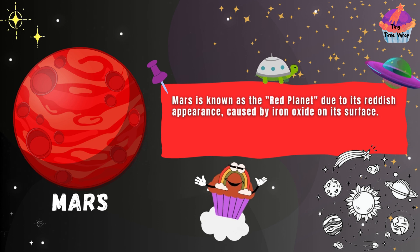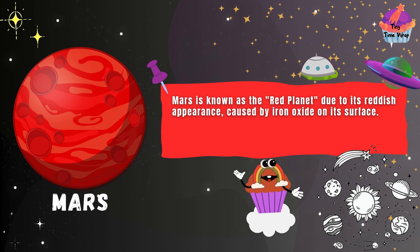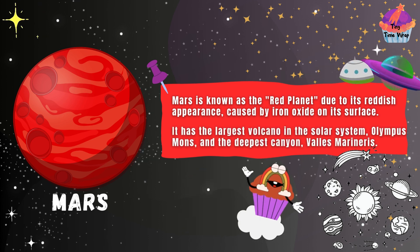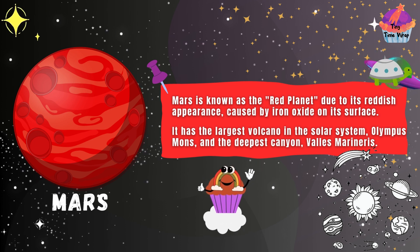Mars is known as the Red Planet due to its reddish appearance caused by iron oxide on its surface. It has the largest volcano in the solar system, Olympus Mons, and the deepest canyon, Valles Marineris.